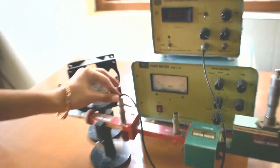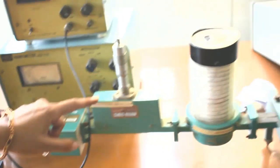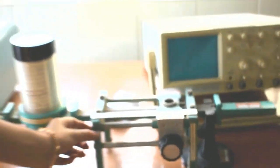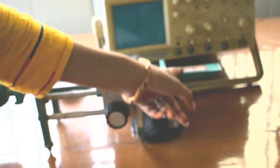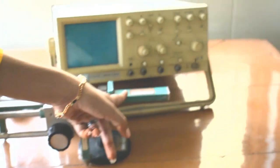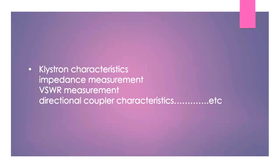It consists of a source, isolator, attenuator, frequency meter, slotted line section. And here, we're using matched termination in place of detector mount. With the help of this microwave test bench also, we can do the list of experiments that I mentioned before.